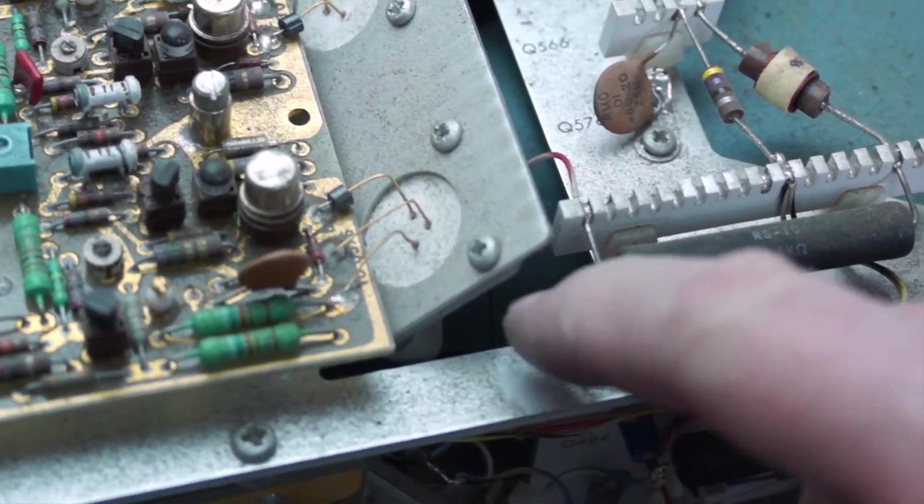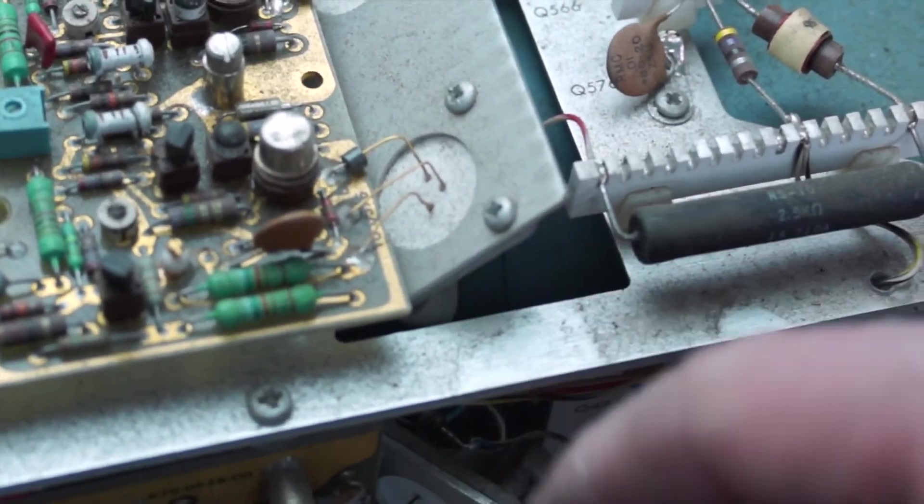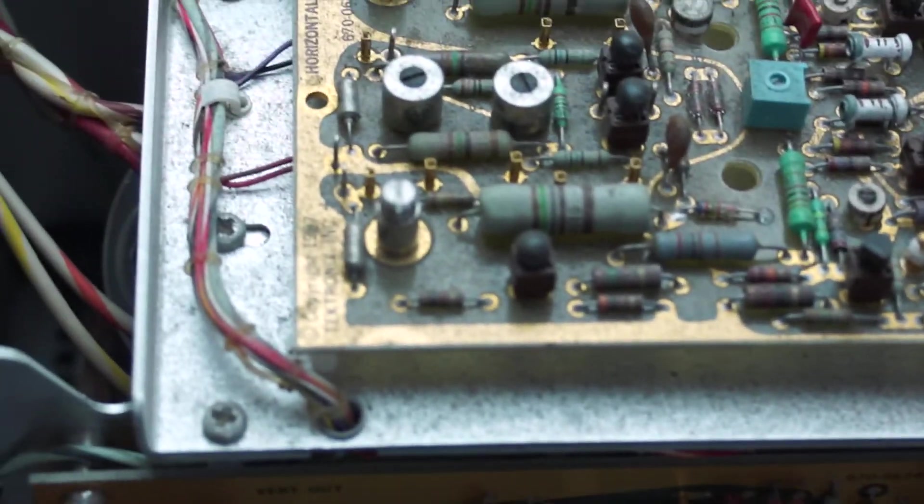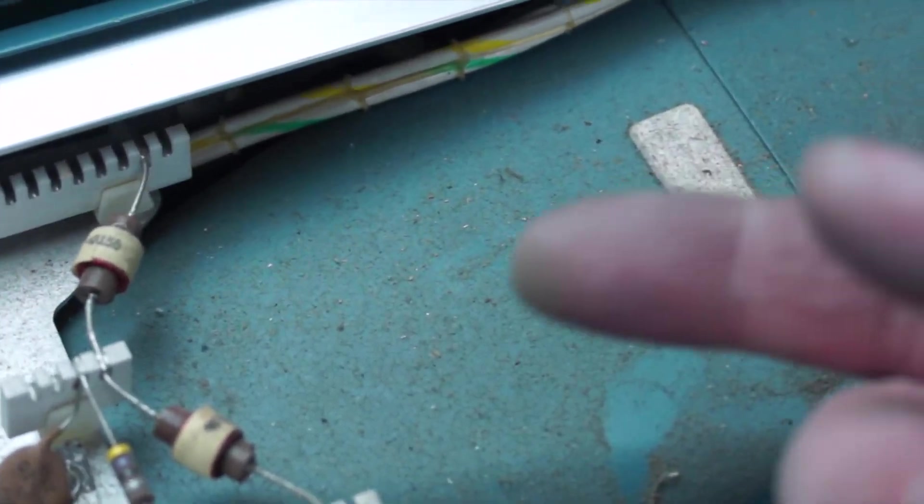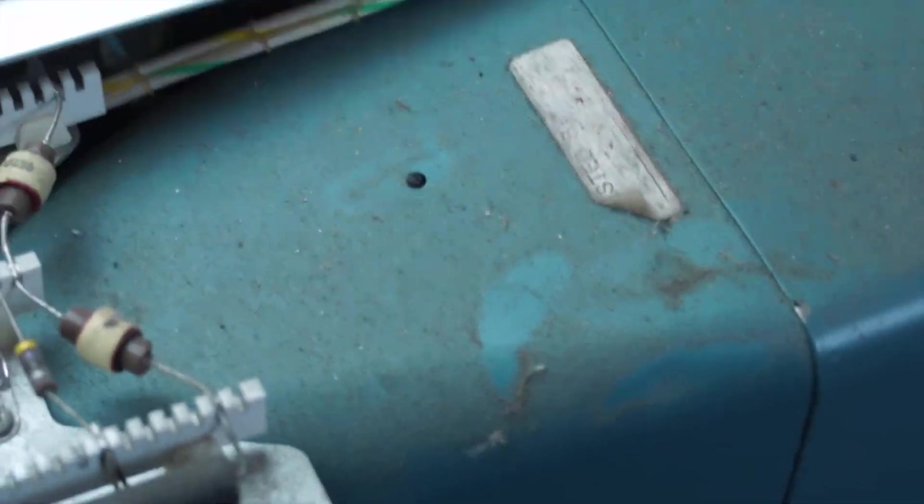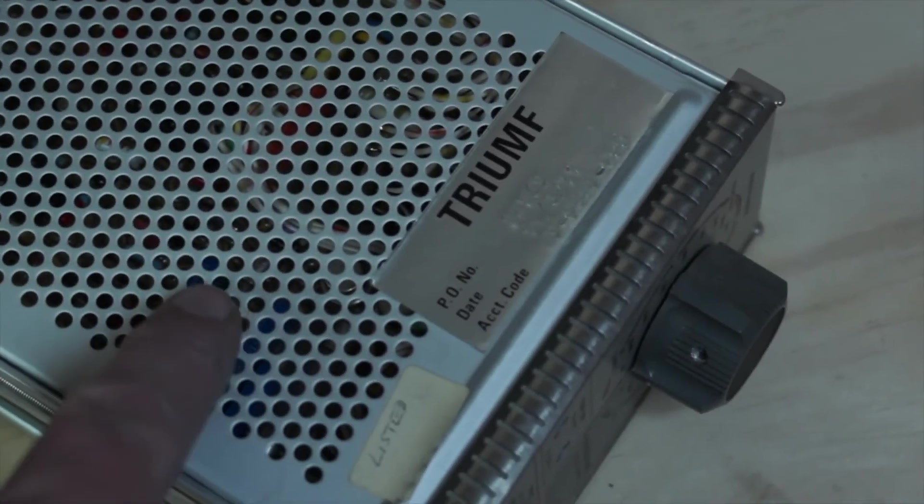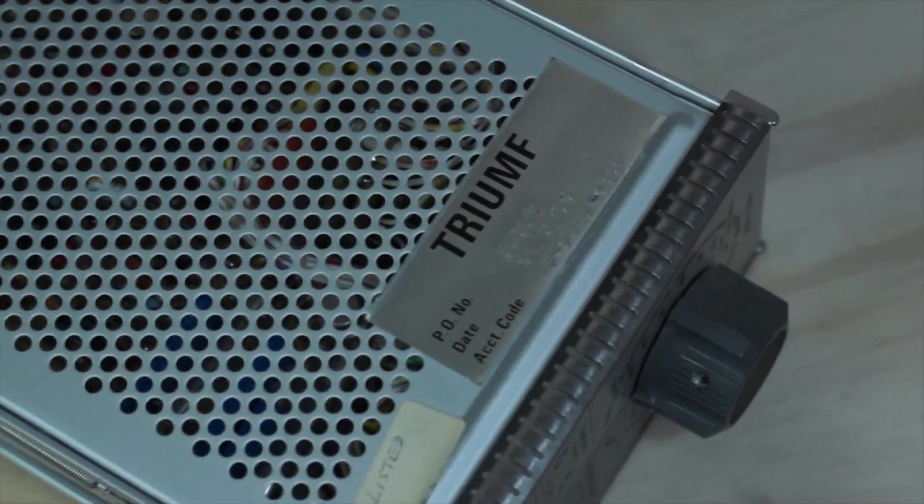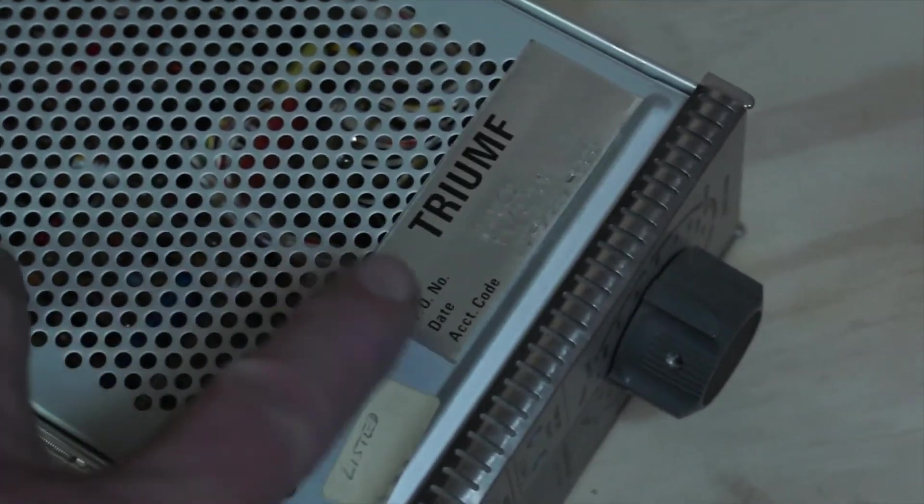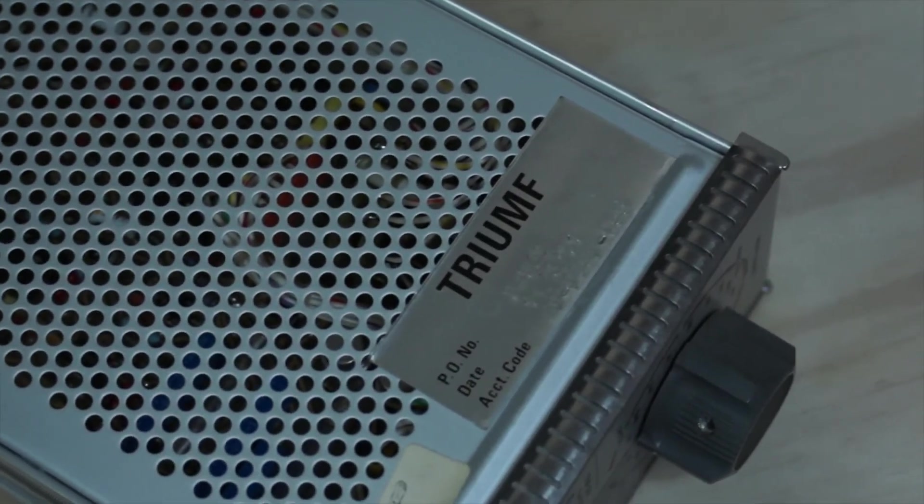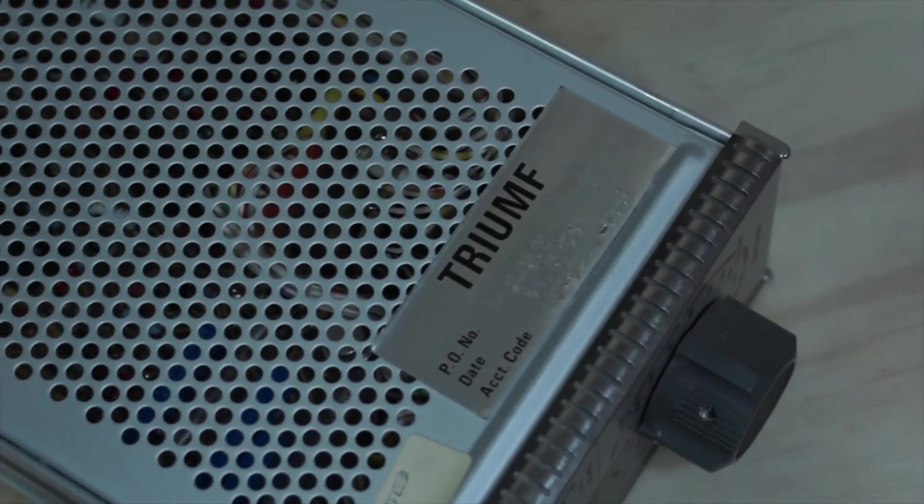Look at the dust on this thing. I think I'm going to clean this up as part of repairing it. I'll do a little bit of a restoration because this stuff is pretty gross. One of the things that's fun about this hobby is you can sometimes get some history out of the equipment. This module here has a Triumph asset sticker on it, which is kind of cool because that's the nuclear lab at the University of British Columbia.